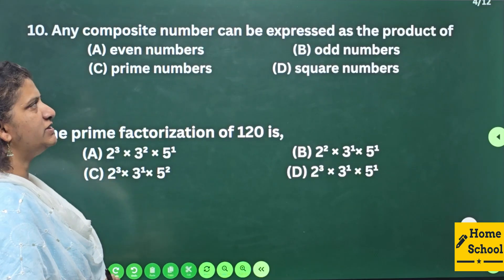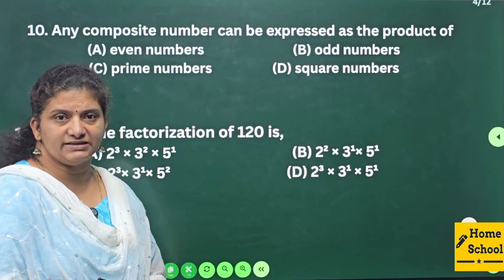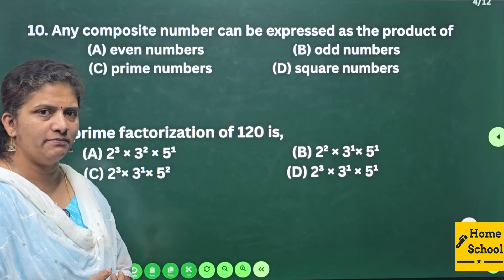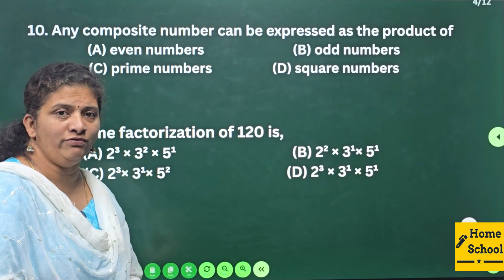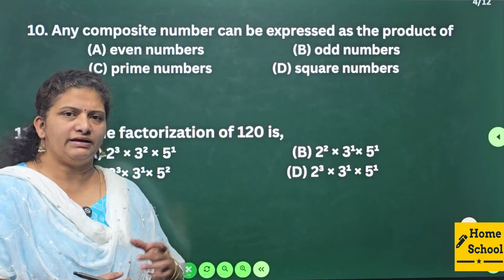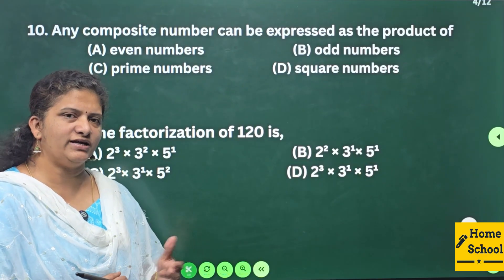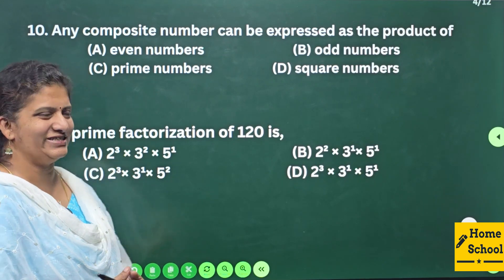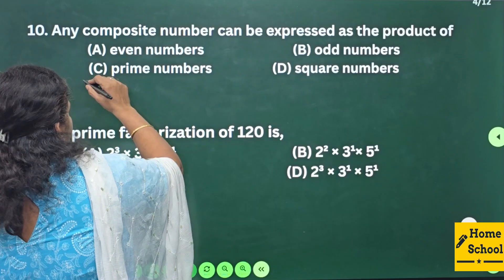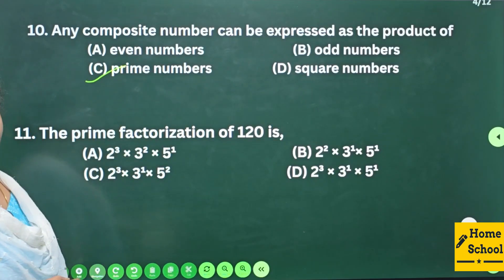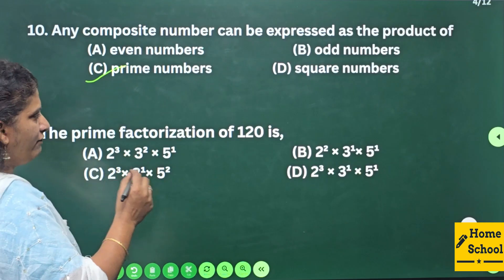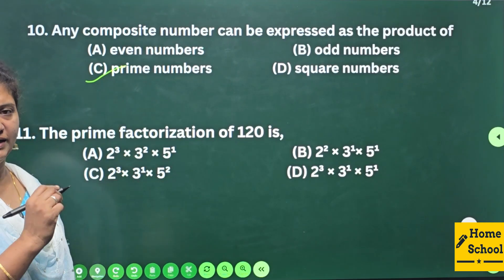Question 10: Any composite number can be expressed as a product of prime numbers. Let's check: 2 and 3 are prime numbers, and 2 × 3 = 6 is a composite number. So any composite number can be expressed as a product of prime numbers — option C. Question 11: The prime factorization of 120 is —